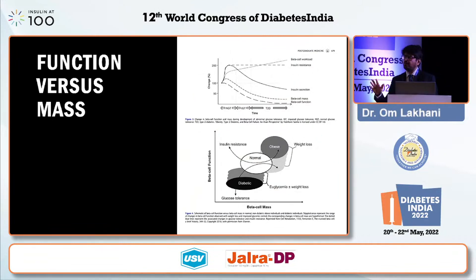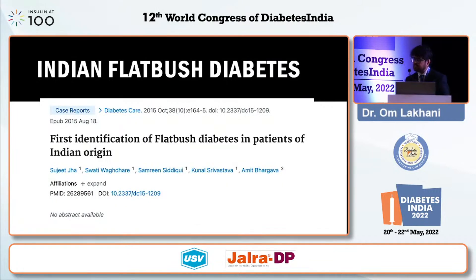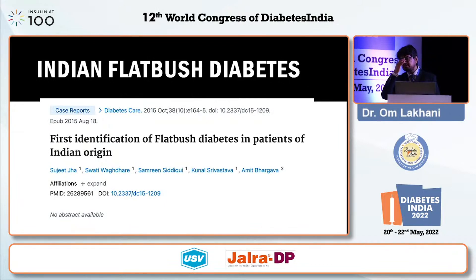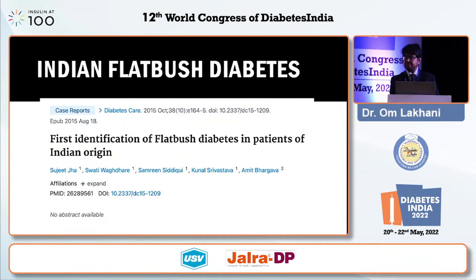At this point there is nothing much we can do about poor beta cell mass, but we can do a lot about beta cell function — and that is what we are looking at in terms of emerging treatment. Clinically, we have all seen the Indian Flatbush variant. Dr. Sujit Jha published a beautiful article in Diabetes Care identifying patients — first identified in Flatbush, Brooklyn — who come with severe hyperglycemia and ketosis. When treated with insulin, after a few weeks the insulin requirement goes away and they go into remission. This is a classical example of oxidative stress causing beta cell dysfunction that is reversible.